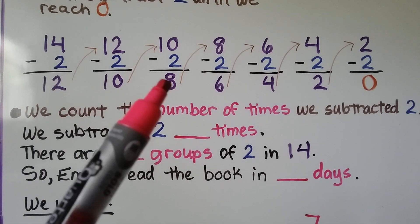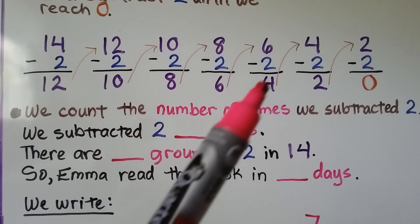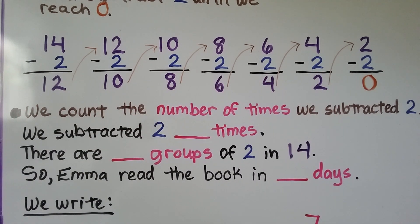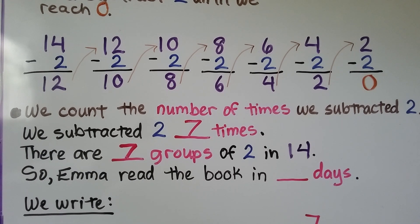Counting: 1, 2, 3, 4, 5, 6, 7. We subtracted 2 seven times. So there are 7 groups of 2 in 14. Emma read the book in 7 days.